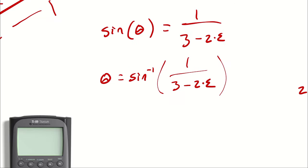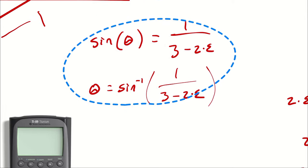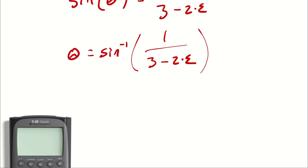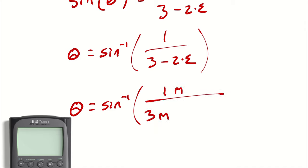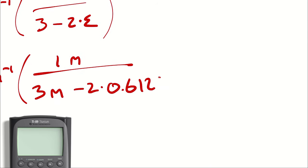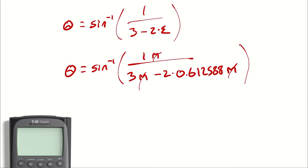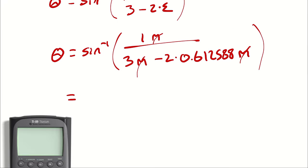Writing this out with units: theta equals arc sine of 1 meter divided by 3 meters minus 2 times 0.612588 meters. Meters cancels and I'm left with a unitless proportion, which is exactly what I want. Computing the answer: arc sine of 1 divided by 3 minus 2 times 0.612588 gives us 34.3 degrees.